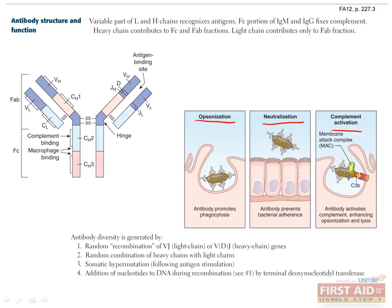An important concept is how antibody diversity is generated. Antibodies are very specific to antigen exposure, which is further important when memory B cells are induced to produce a robust antibody response to re-exposure to previously encountered antigens. Antibody diversity is generated through: random recombination of VJ or VDJ genes encoding both heavy and light chains; random combination of heavy chains and light chains; somatic hypermutation following antigen stimulation; and addition of nucleotides to DNA during recombination. Of these, VDJ recombination and somatic hypermutation are most important.